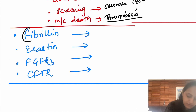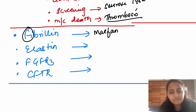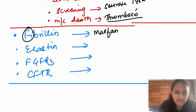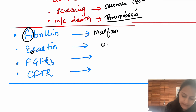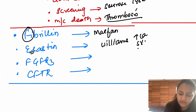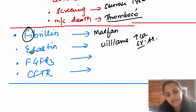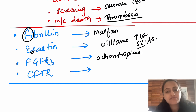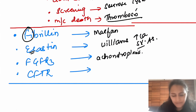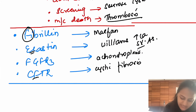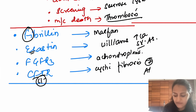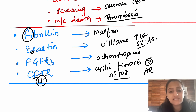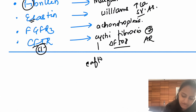Important genes: fibrillin-1 on chromosome 15 is affected in Marfan syndrome — tall patient with arachnodactyly, arm span greater than height, aortic dissection, and mitral valve prolapse. Williams syndrome features elevated calcium, supravalvular aortic stenosis, and elfin facies. FGFR3 is affected in achondroplasia — short stature with trident hand. CFTR is cystic fibrosis — a chloride channel defect on chromosome 7, autosomal recessive, with delta-F508 mutation. Kalydeco/CFTR drugs include correctors and potentiators.